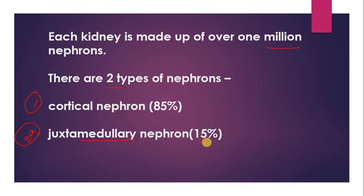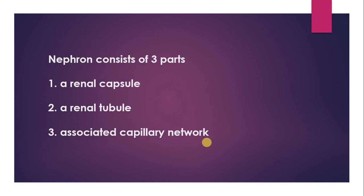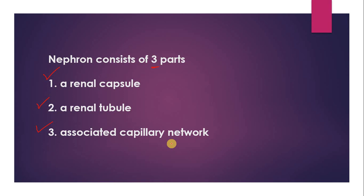The remaining 15 percent of nephrons are present in the medulla, coming under the category of juxtamedullary nephrons. The nephron consists of three main parts: number one is the renal corpuscle, also called the glomerulus; number two is the renal tubule, which has different parts starting from the glomerulus — that is PCT, then loop of Henle, and DCT. The DCT is attached to the collecting duct where all the urine passes into the bladder.